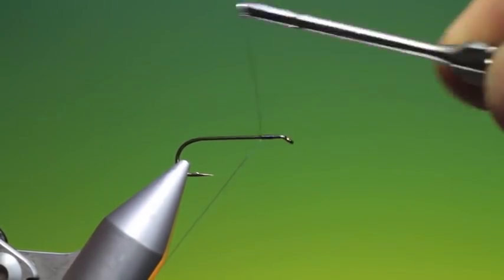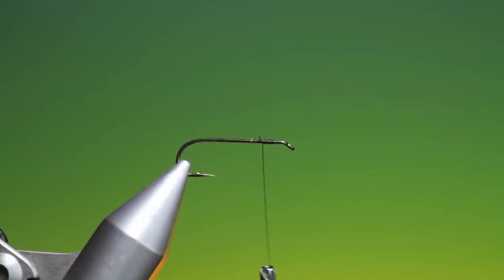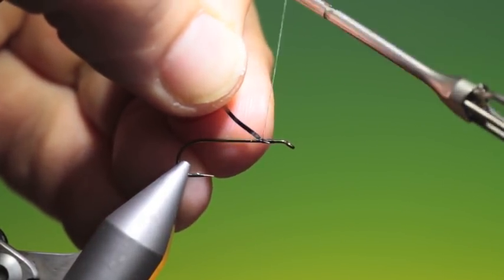So we want a bit of tying thread on here. Just go back a few turns, get rid of that. And we need some silver tinsel.